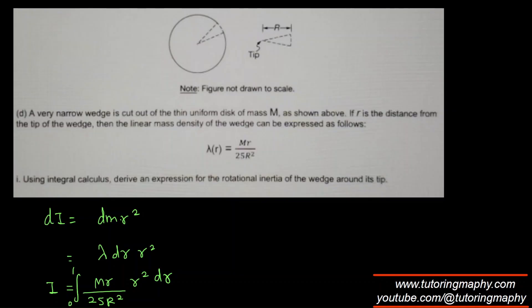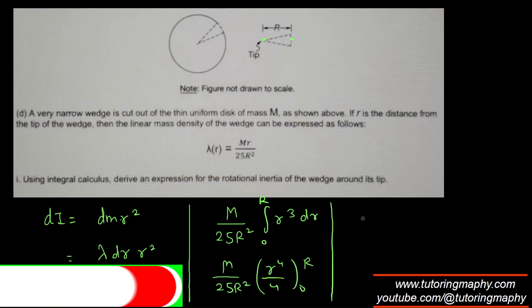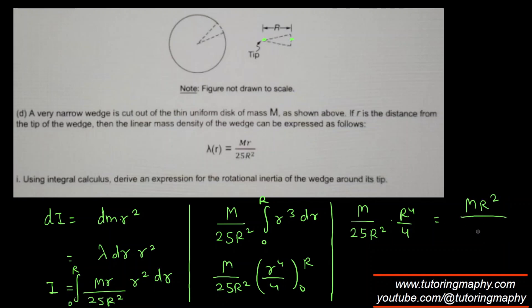Integration bounds will be from 0 to capital R because we are going all the way till the R, till the maximum, the total radius. So M over 25 R square is a constant. R times R square becomes R cube. R cube integration from 0 to R. And what is the R cube integration? I believe that's R to the 4 over 4 with the bounds of 0 to capital R. And if I put the bounds, that's going to look like M over 25 R square times R raised to 4 over 4. R raised to 4 over R square is just R square. M remains as it is. And 25 times 4 is 100. So it's 1 over 100 MR square.